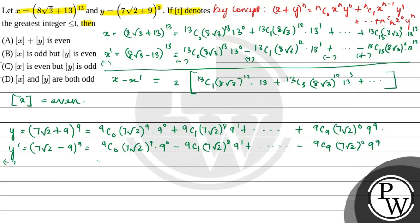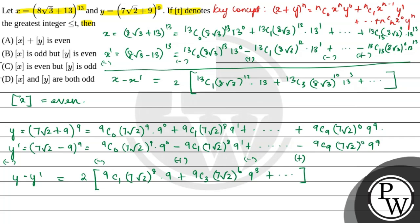If we subtract, we get y - y' = 2·[C(9,1)·(7√2)^8·9 + C(9,3)·(7√2)^6·9^3 + ...]. Here y - y' is a multiple of 2, so the greatest integer [y] will also be even.